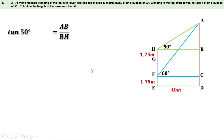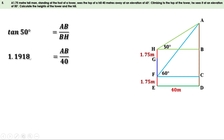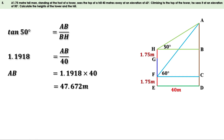The value of tan 50 is 1.1918, and BH equals DE which is 40 meters. So we write 1.1918 equals AB by 40. Taking 40 to the other side: AB equals 1.1918 times 40. Multiplying, we get 47.672 meters. That is the length of AB is 47.672 meters.